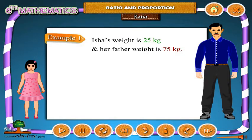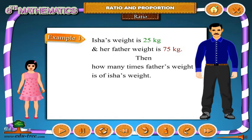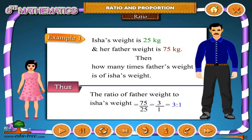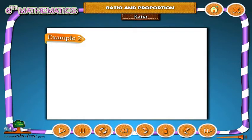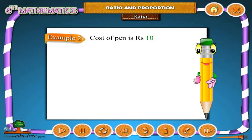weight is 75 kilograms. Then how many times is father's weight compared to Aisha's weight? Thus, the ratio of father's weight to Aisha's weight is 75 by 25, which equals 3 by 1, which equals 3 ratio 1.